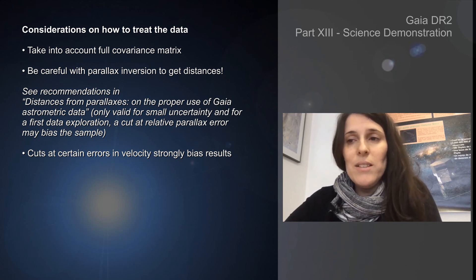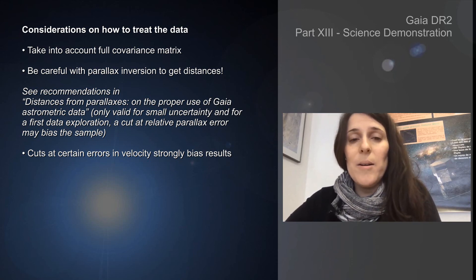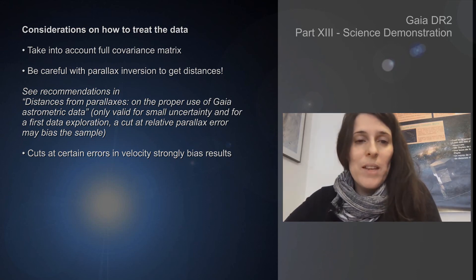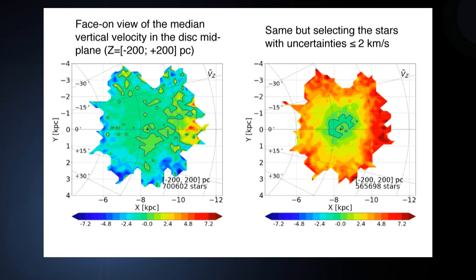Another thing that would bias the results is a cut on the error in derived velocities. I'm showing two panels of the median vertical velocity as a function of x and y in the disk mid-plane. On the left we have the case where the full sample is used, and on the right the case where we cut keeping only uncertainties smaller than or equal to two kilometers per second. The results for the median Vz are completely different — we get a very strong bias if we apply this kind of selection on velocity errors.